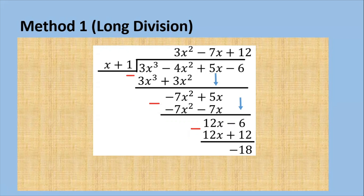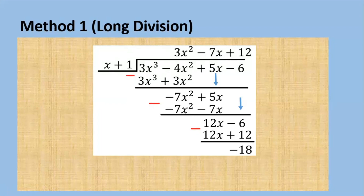Same procedure again. You will divide the negative 7x squared by x and you will get negative 7x. Then we multiply: negative 7x multiplied by x gives negative 7x squared, and negative 7x times 1 gives negative 7x. We subtract and we are going to get 12x. We carry down the negative 6, so that's 12x minus 6.